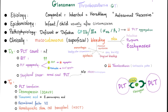Glanzmann's thrombasthenia is also autosomal recessive, but here the problem is in GP2B3A, so the problem is in aggregation. Clinically it presents the same — mucocutaneous bleeding. Platelet count is normal, bleeding time is high. Platelet aggregometry is the opposite: with ADP we are abnormal.